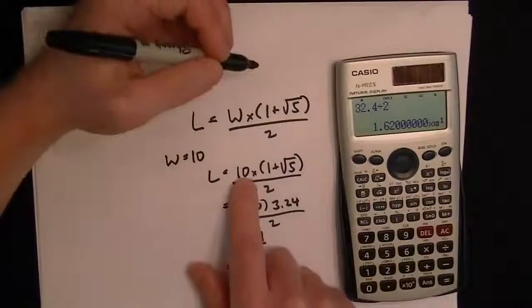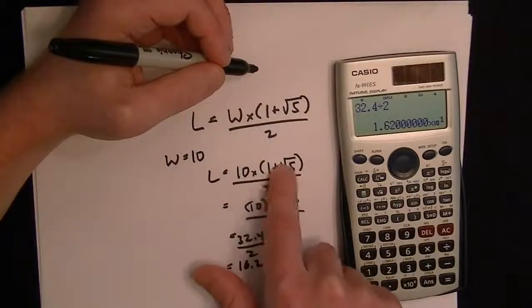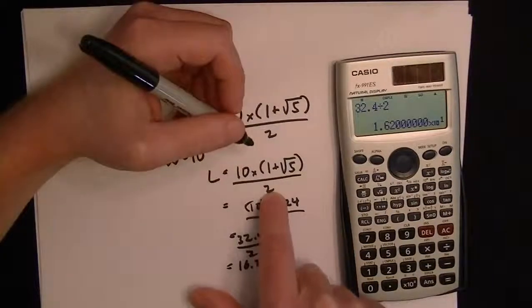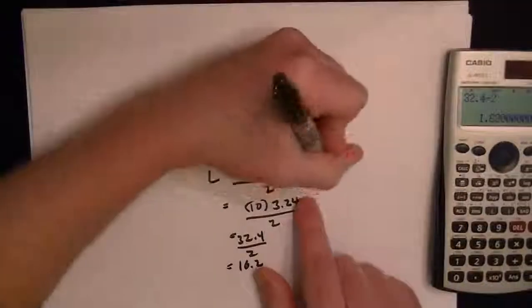So the key here is taking care of the parentheses first, so you do the addition in here. Then you could divide at that point, you could divide by 2 and then multiply by 10, or you could do it whatever.